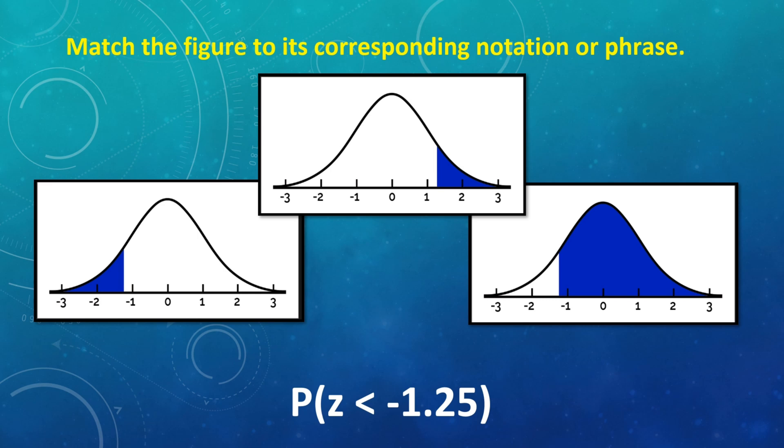Next is the probability of z less than negative 1.25. The answer is the left side.